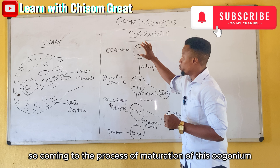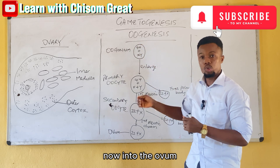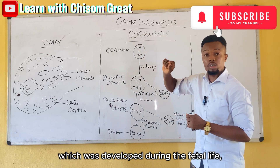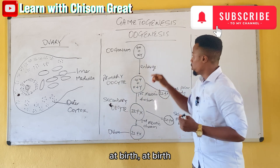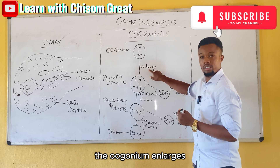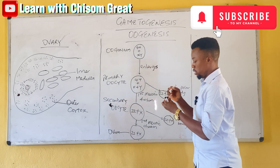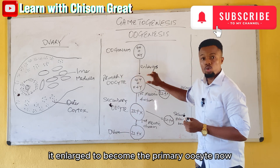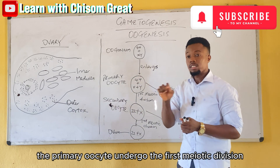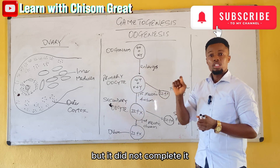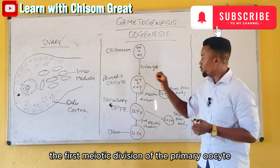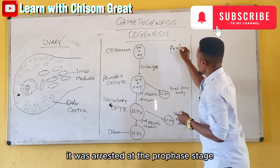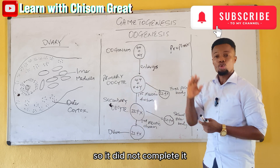Coming to the process of maturation of the oogonium into the ovum: the oogonium, which was developed during fetal life, enlarges at birth to form the primary oocyte. The primary oocyte undergoes the first meiotic division but does not complete it — the first meiotic division of the primary oocyte was arrested at the prophase stage.